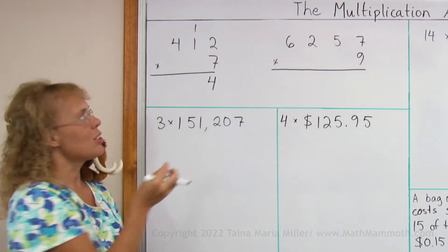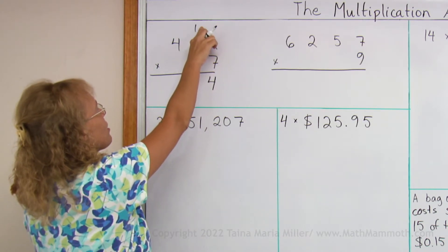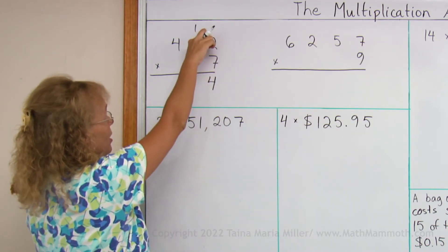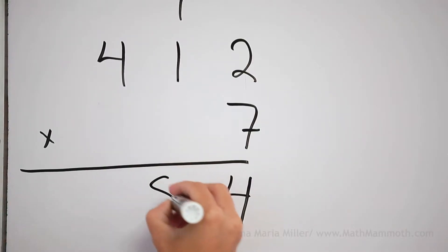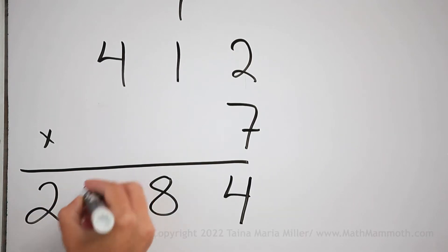But in my mind I just go 7 times 1, 7. And I add this regrouped 10, so I get 7 times 1 plus 1, which is 8. And lastly 7 times 4, which is 28. And those are the hundreds. And that's all done.